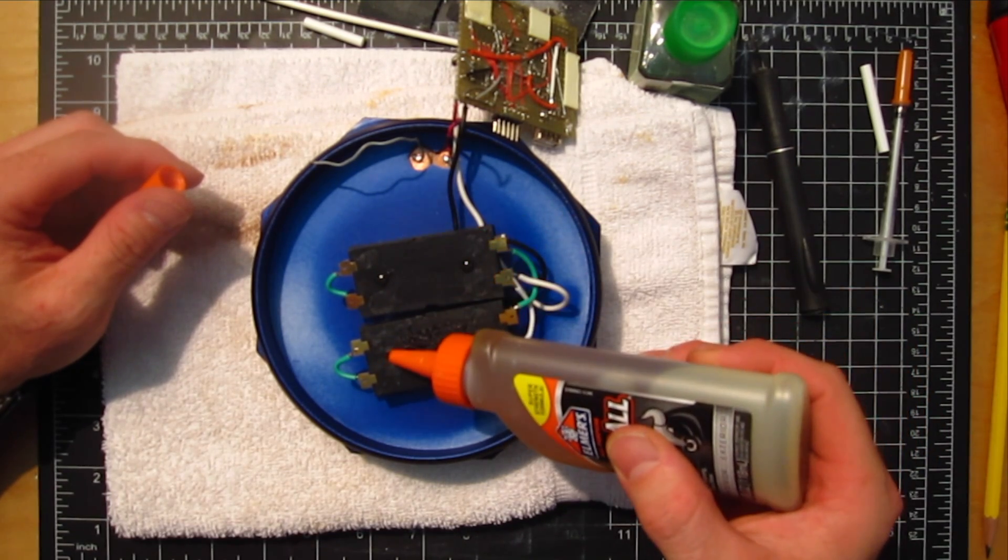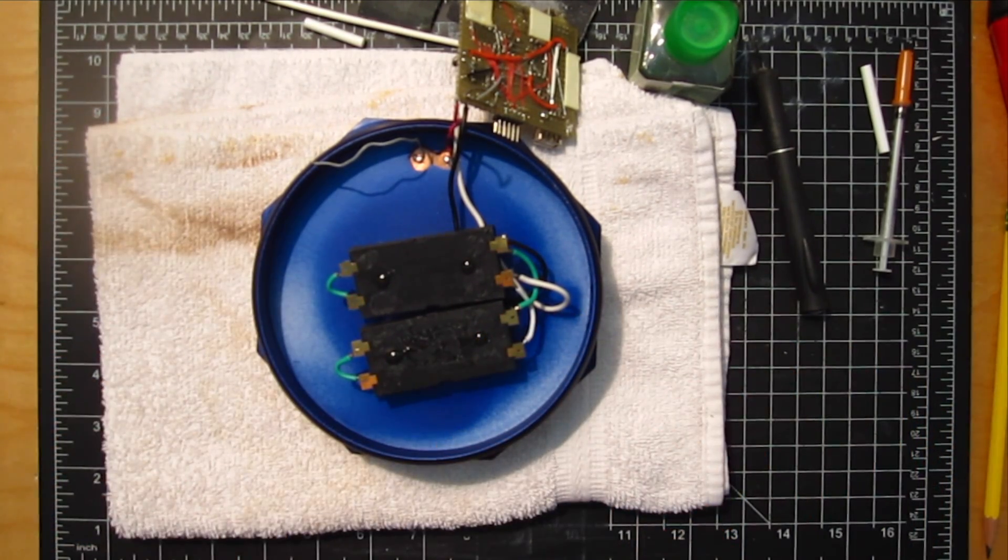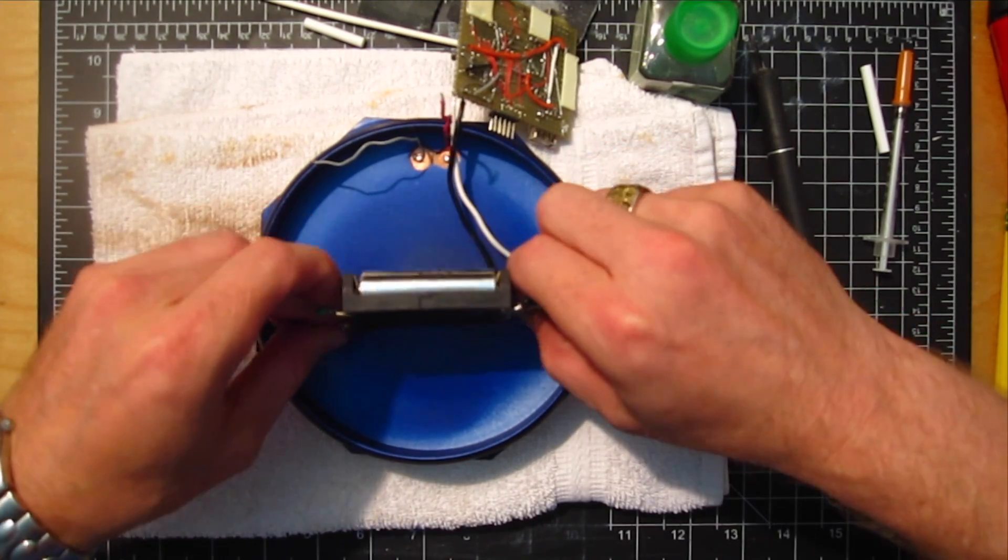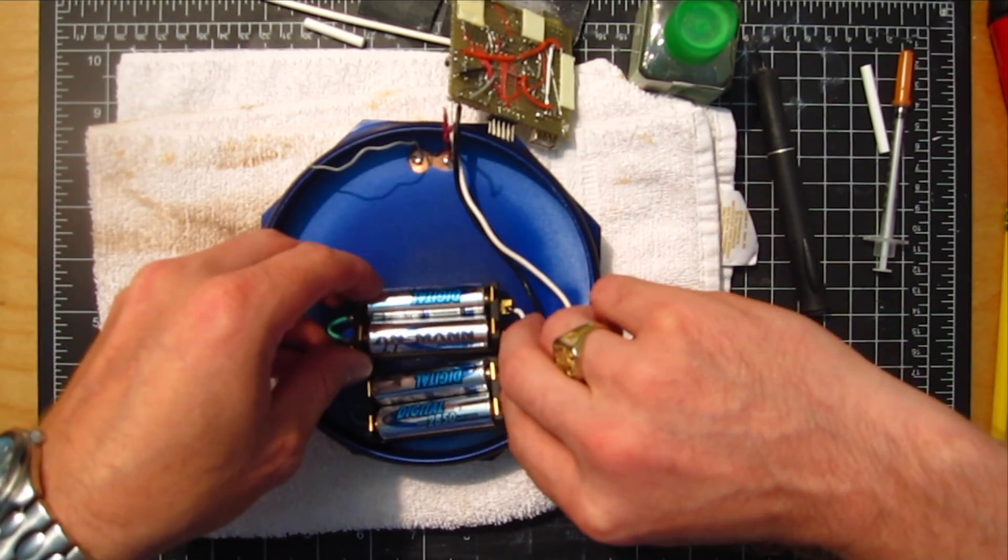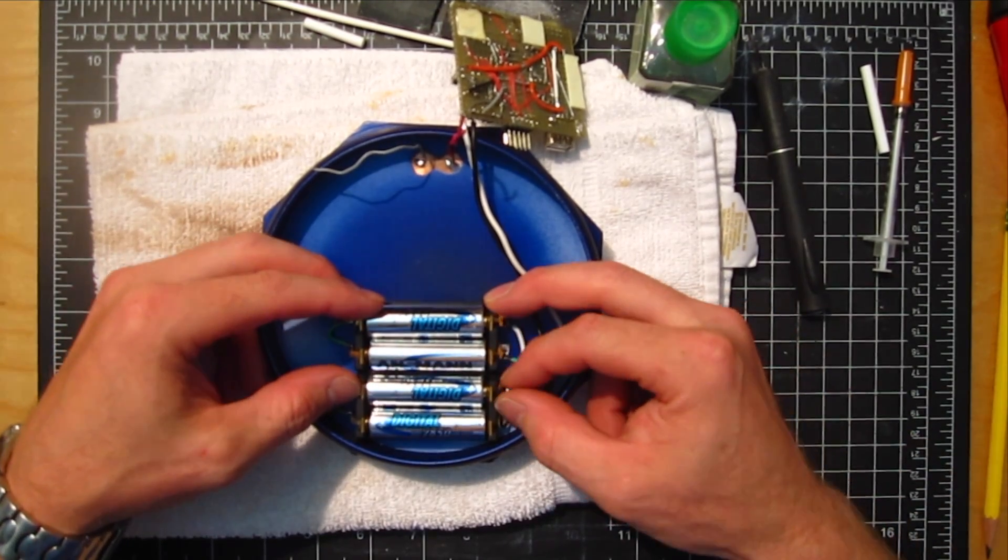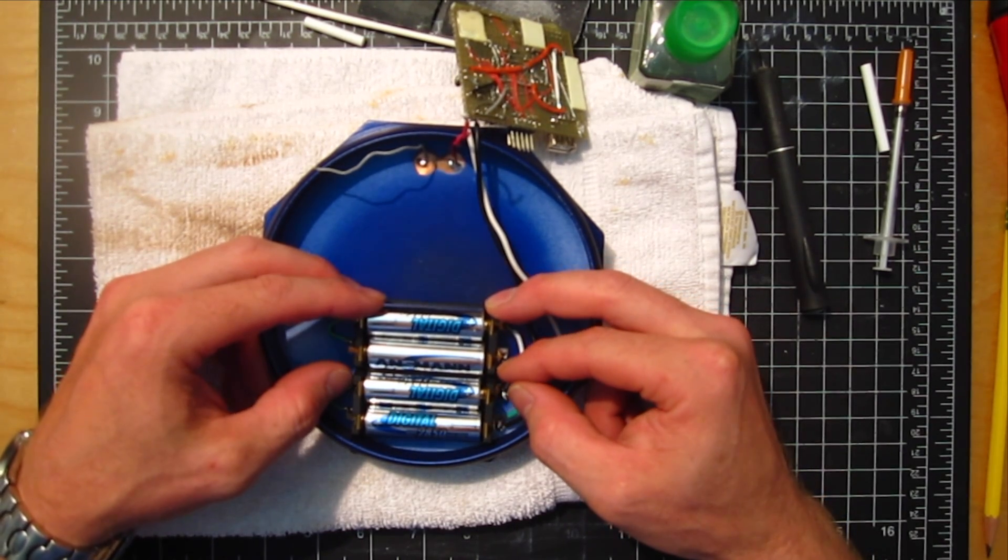Here I'm gluing the batteries in place. I'm using some of that Gorilla Glue. It expands. It's a urethane glue. Again, I'm gluing dissimilar materials together here, so I want to use a good glue. You probably could use cyanoacrylate or Super Glue here as well. I hold them in place to get them in the right spot.